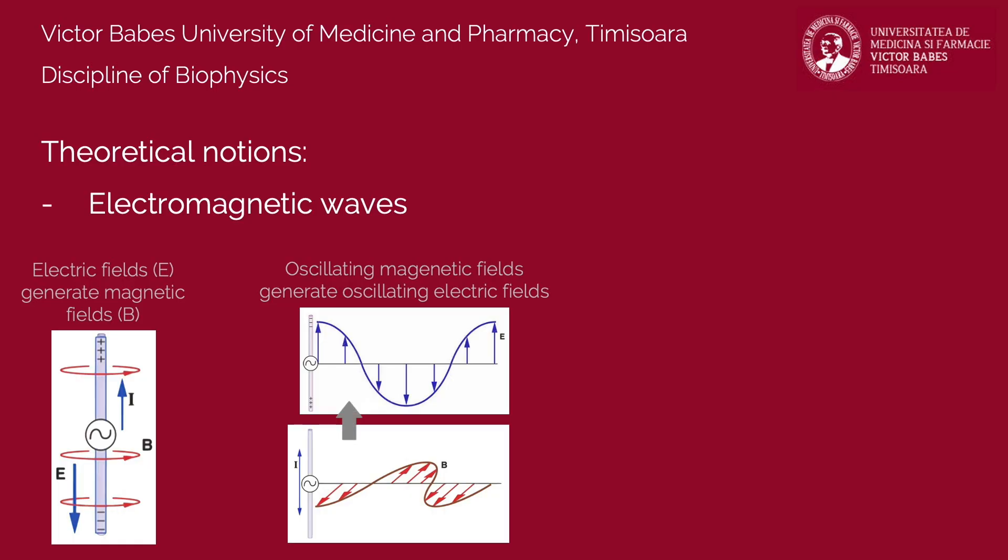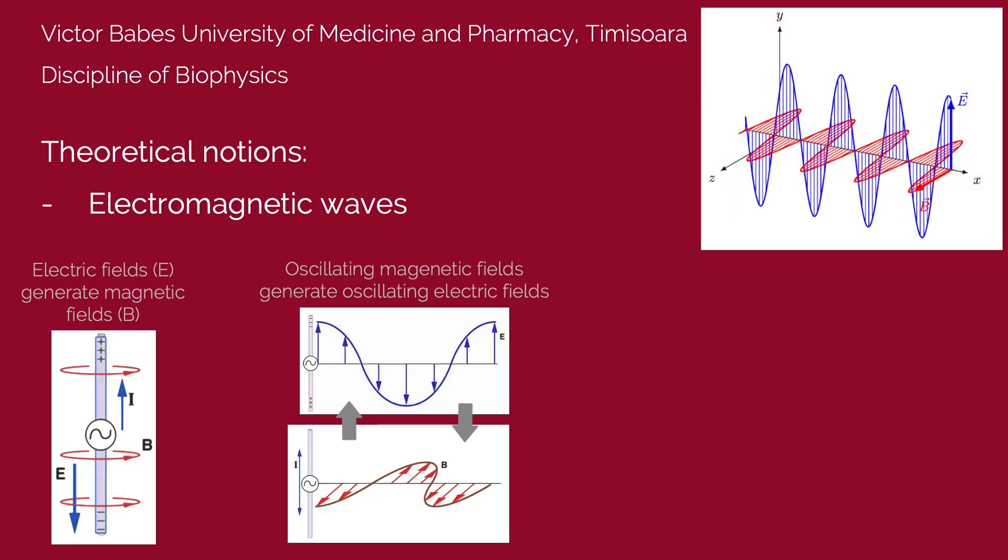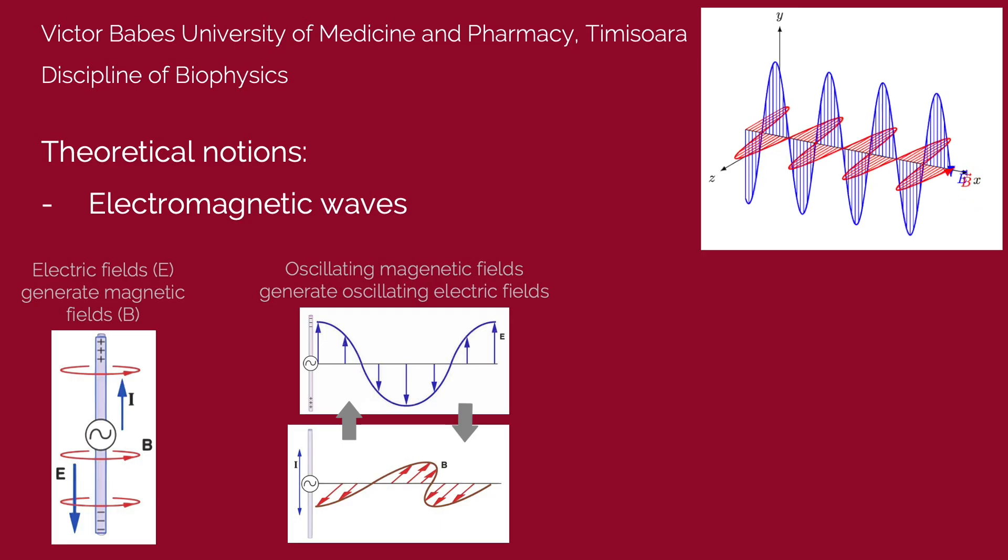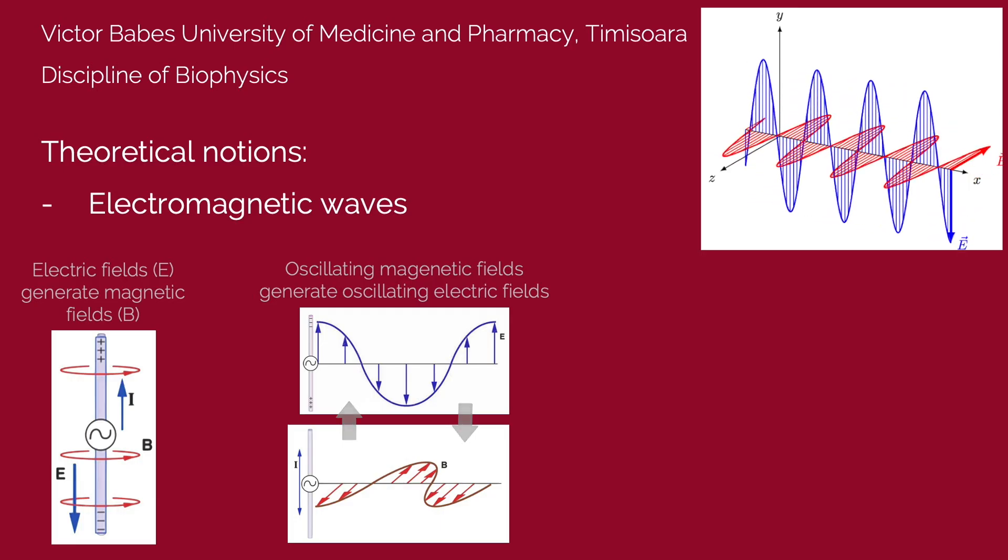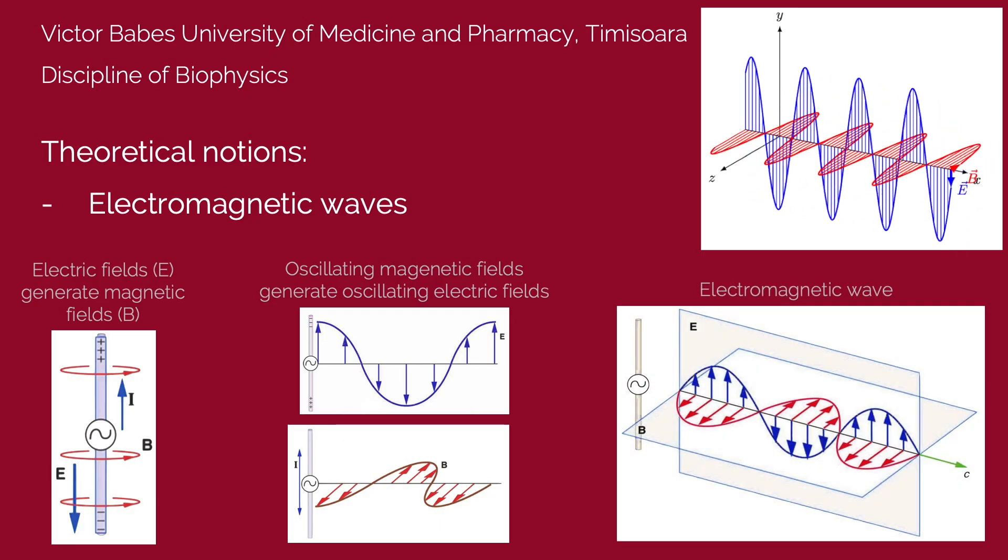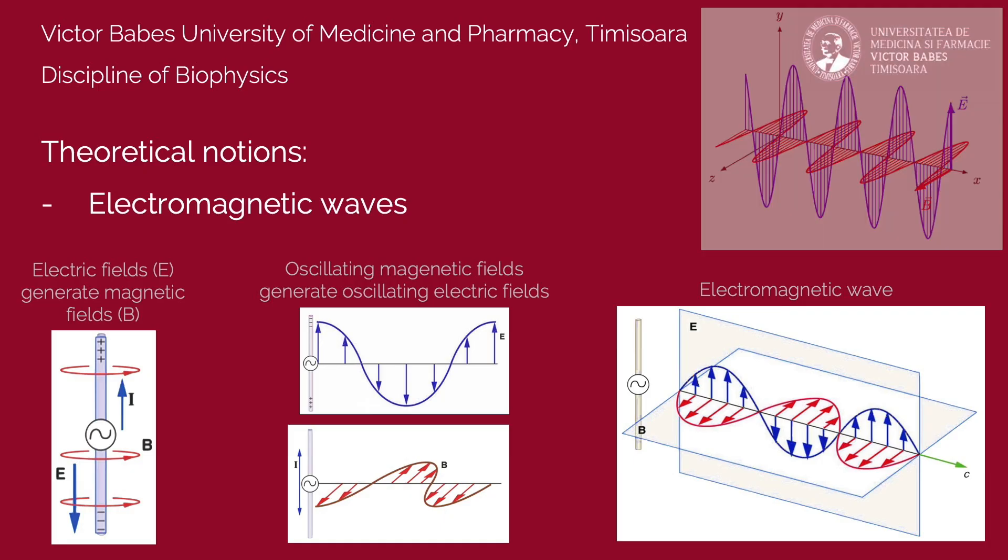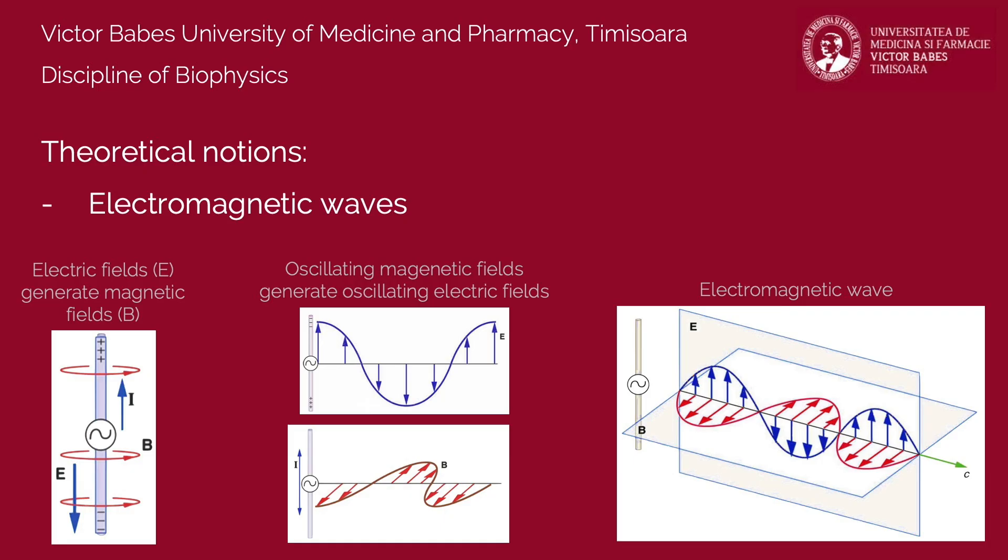This is why oscillating electric fields generate oscillating magnetic fields, which in turn create other oscillating electric fields and the sequence repeats. The collection of electric and magnetic fields, which are oscillating and self-generating while propagating in space, forms the electromagnetic wave. Light is an electromagnetic wave.